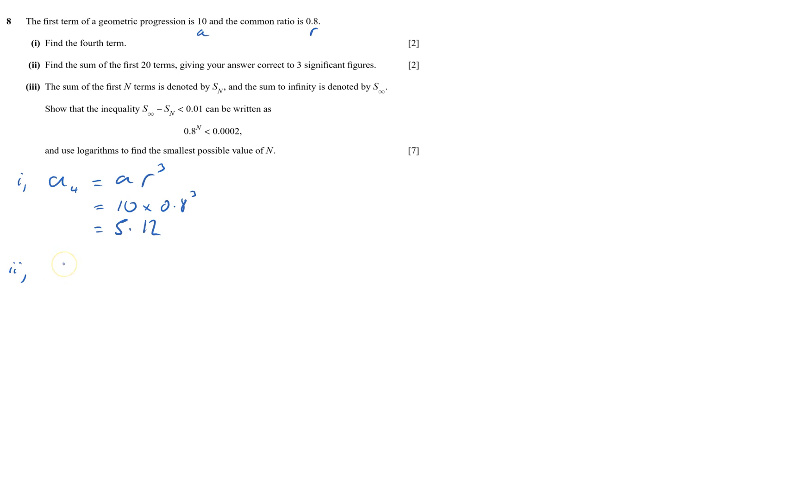First part, second part, find the sum of the first 20 terms. Well, sum of the first 20 terms equals a times 1 minus r to the n, all over 1 minus r, that's on the formula sheet.